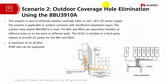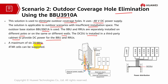Scenario 2 is outdoor coverage for hole elimination using a blade site, BBU3910A. This solution eliminates outdoor coverage holes using minus 48V DC, applicable for outdoor scenarios where space is limited. BBUs and RRUs are installed separately on a pole or wall. The DC DU is installed in a third-party cabinet to supply DC power to the BBU and RRU. A maximum 20 MHz bandwidth can be used and 4T4R cells are supported, with one to six RRUs.